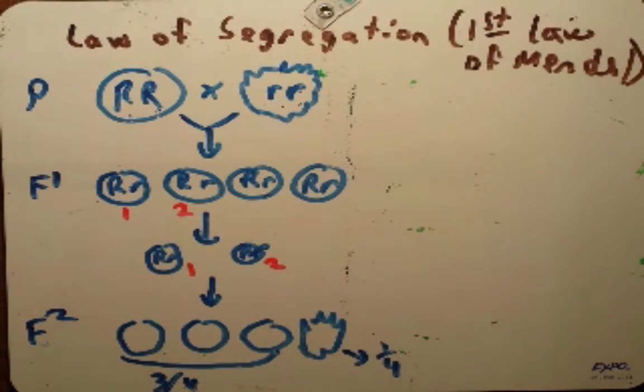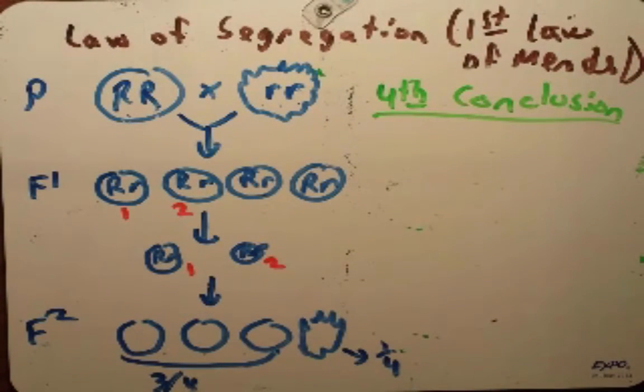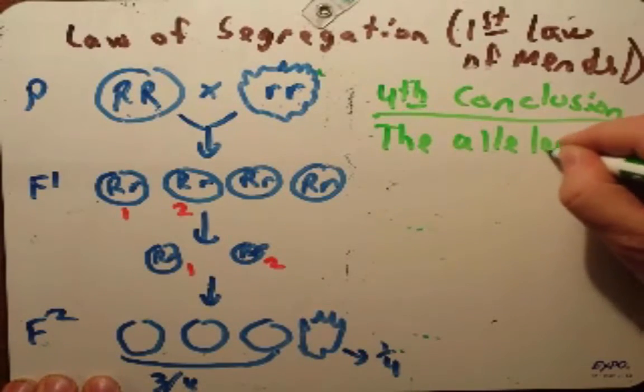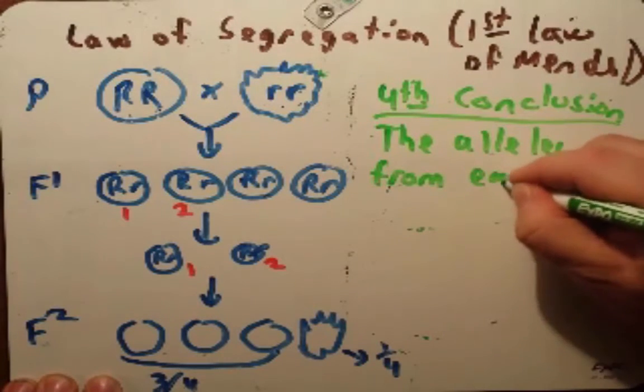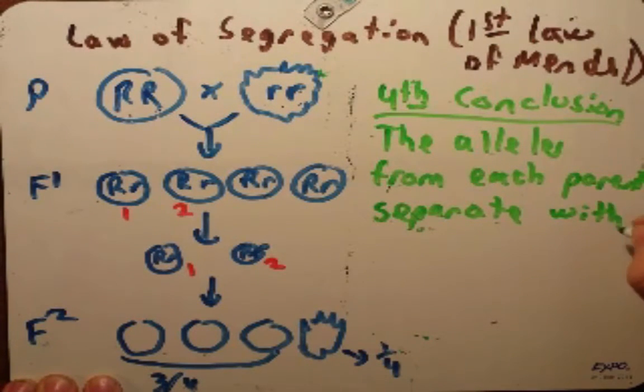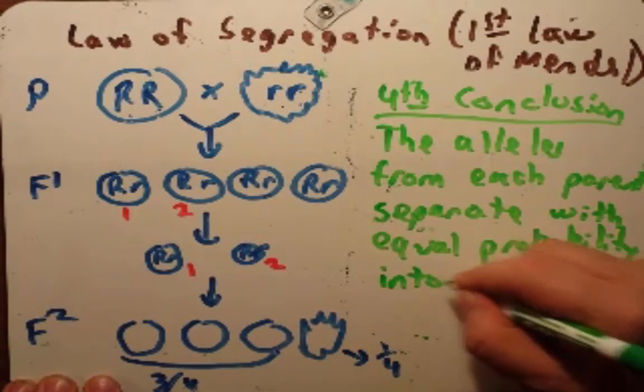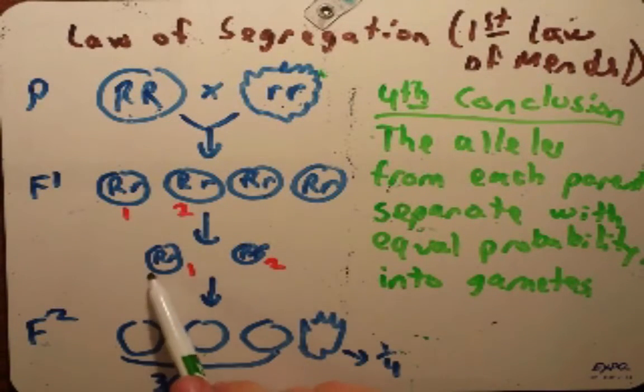This fourth conclusion we see evidenced in the F2 generation. The fourth conclusion stems off of the second a little bit. It says that the alleles from each parent separate from each other, but not just separate from each other. They separate with equal probability into the gametes. So for instance, big R, little r, we know that they separate. That 50% of this organism's gametes are going to be big R, the other 50% will be little r. Same with this other parent. Not one or the other genotype is favored. And the one that is used for fertilization is chosen randomly.